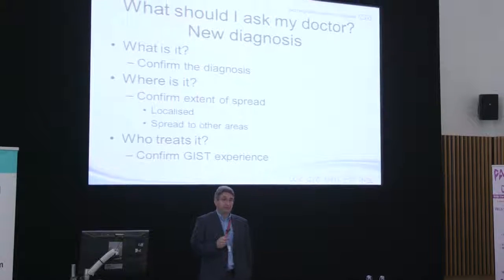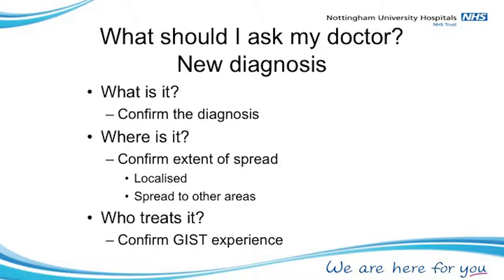When I see patients at this stage, the most important question is: what is it? The surgeon should look at the report and say, 'I've got the pathologist's report — it is definitely a GIST because it has the right markers and the right look.' The next big question is where is it, because there is a big difference between a localised GIST and one that has already spread. And finally — probably the most important question — is who treats it, because you want someone with experience: the surgeon, the pathologist, the radiologist, and the oncologist.